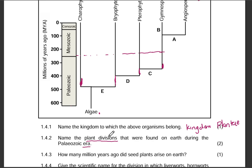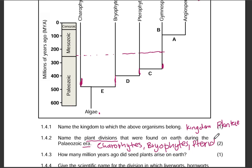So the answers for two marks — plant divisions found during the Paleozoic era: Charophytes, then Bryophytes, then Pteridophytes, and also Gymnosperms as the last plant division. For two marks, everything has to be correct to get the marks.